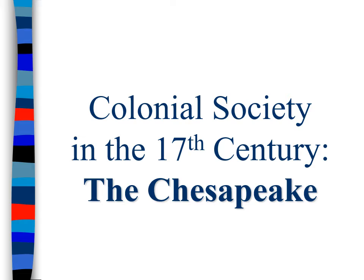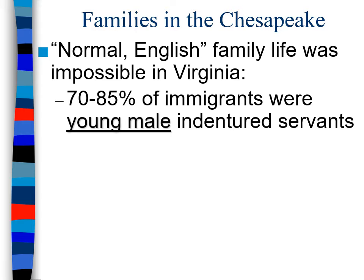Now we move down to the other major colonial region — the Chesapeake in the 17th century — our two areas to really focus on. The big question is: how is this different from New England? It is very, very different, even though they're coming over at similar times. This can stem all the way back from their motives to come over. The normal English lifestyle we saw in New England wasn't really possible in Virginia, wasn't really possible in Jamestown. Even who is coming over — 70 to 85% of immigrants were young, male, unmarried indentured servants.